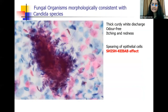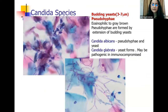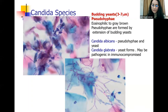The next common organism is Candida. The woman may present with thick, curdy white discharge which is odorless, and there may be itching and redness. Classically there is the appearance of a shish kebab effect on the pap smear, with pairing of epithelial cells. What you see are budding yeast forms and pseudohyphae. Most common is Candida albicans. Candida glabrata shows only yeast forms and is more commonly seen in the immunocompromised. These are very easily seen on the pap smear, especially in liquid-based cytology.